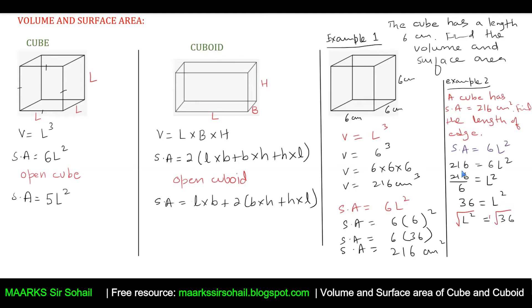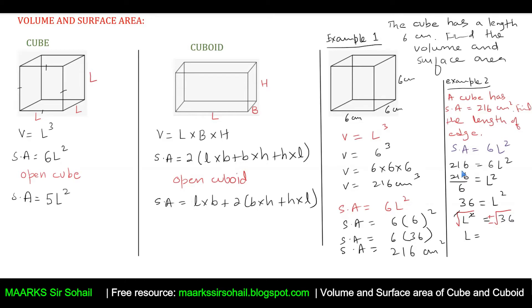Taking the square root of both sides: l = ±√36. Always write ± when taking a square root of a squared quantity, because both −2² and 2² equal 4. However, since length is always positive, we take the positive root: l = 6 cm.